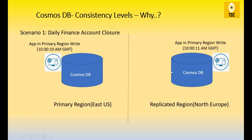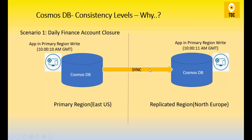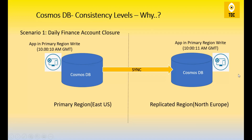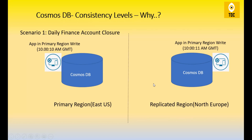Consistency levels come into picture only when you are replicating data to different regions. There will be a primary region where your application is connected and you are doing reads and writes, and a secondary region where data is continuously getting synced. If you don't have a secondary region, consistency levels are not relevant.